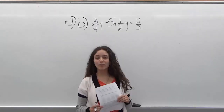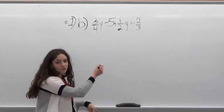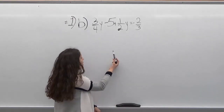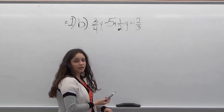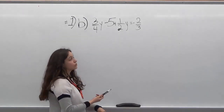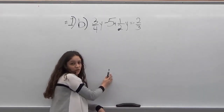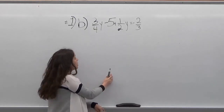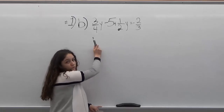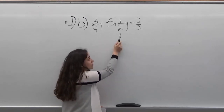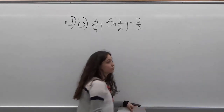Hello, welcome to Help Your Math. Today we are going to solve this equation for y, and we're going to use a method to make it easier to solve, which is to multiply all of these by the least common denominator, which is 12 in this case, because 4 times 3 is 12, 2 times 6 is 12, and 3 times 4 is 12.